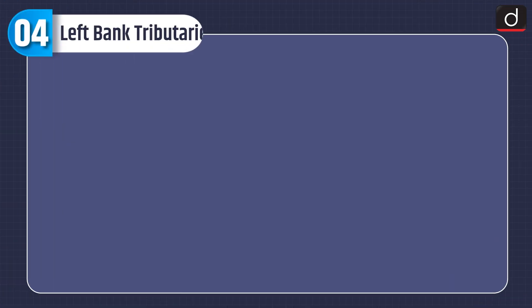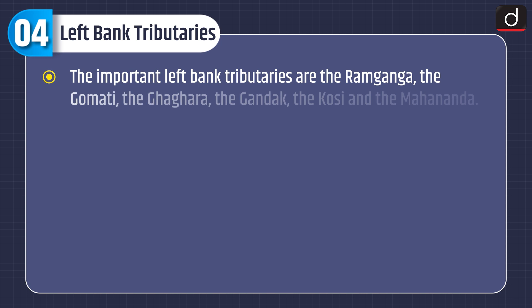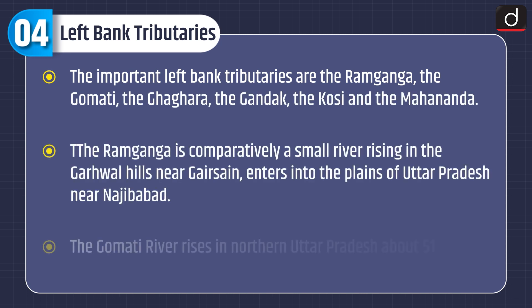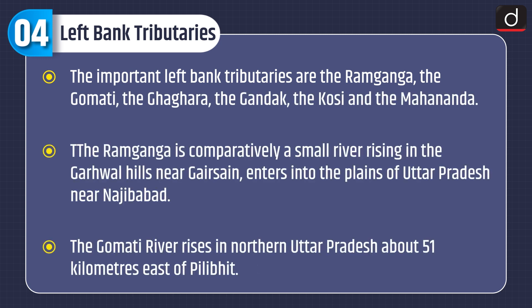The important left bank tributaries are the Ramganga, the Gomti, the Ghagra, the Gandak, the Kosi, and the Mahananda.